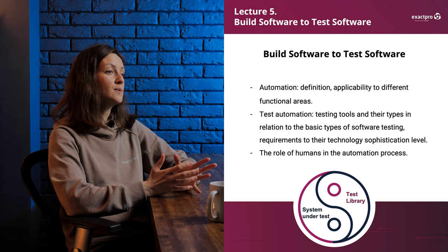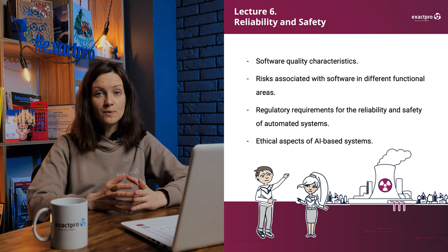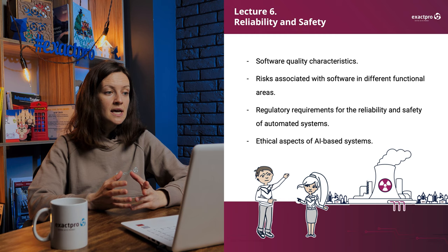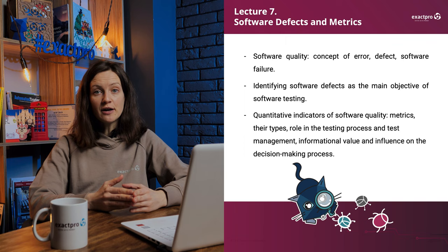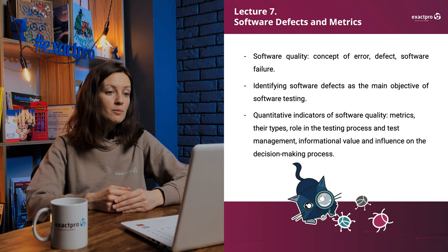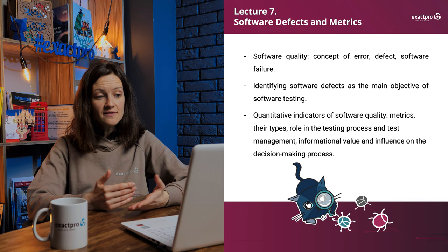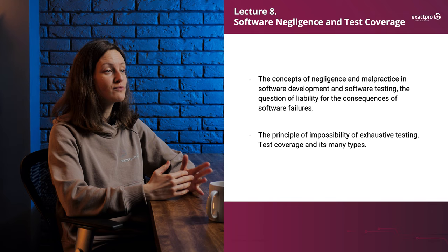Lecture 6 raises the questions of reliability and safety. We'll start with software quality characteristics and go on to discussing the risks associated with software in different functional areas, the regulatory requirements for reliability and safety of automated systems, and the ethical implications of AI systems. At Lecture 7 on software defects and metrics, you will learn about software quality, the concepts of error, defect, and software failure, and the quantitative software quality characteristics — their metrics, types, roles in the testing process, informative value, and influence on the decision-making process.